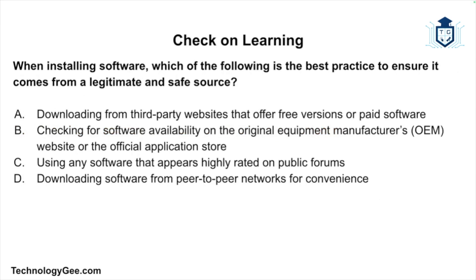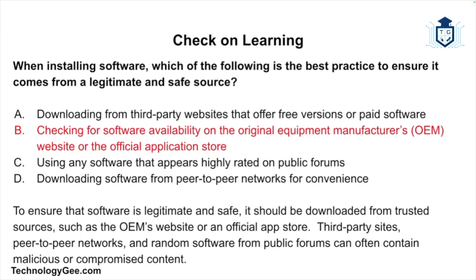Next question: when installing software, which of the following is the best practice to ensure it comes from a legitimate and safe source? Is it downloading from third-party websites that offer free versions of paid software? Checking the software availability on the OEM website or the official application store? Using any software that appears highly rated on public forums? Or downloading software from peer-to-peer networks for convenience? The correct answer is checking for software availability on the OEM website or official application store, as third-party sites, peer-to-peer networks, and random forum software can often contain malicious or compromised content.